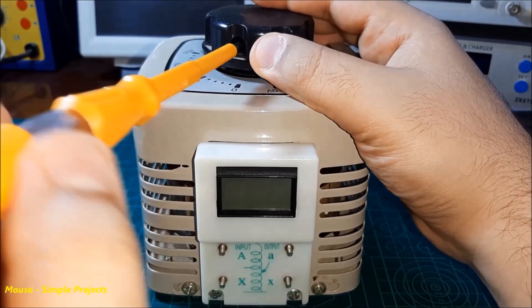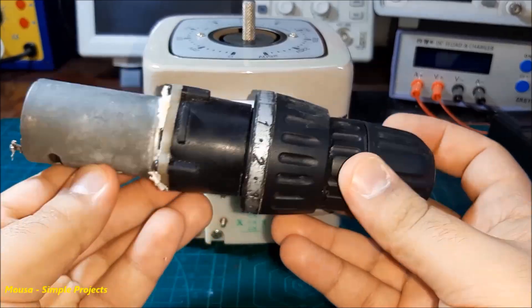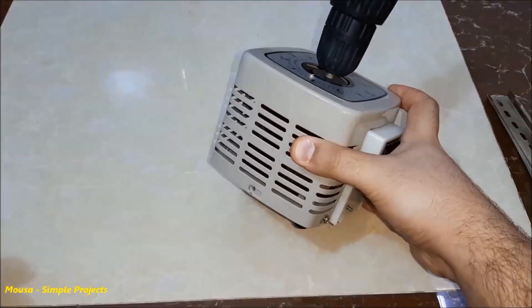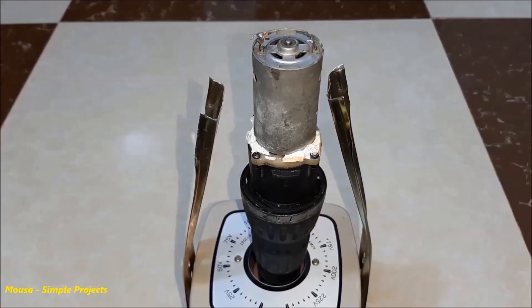I removed this plastic knob and replaced it with a DC geared motor, and fixed the motor by using DIN rail.